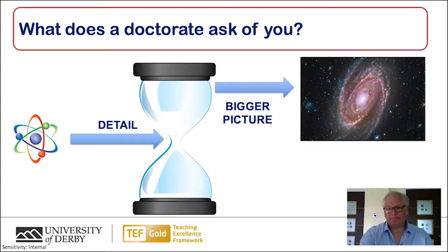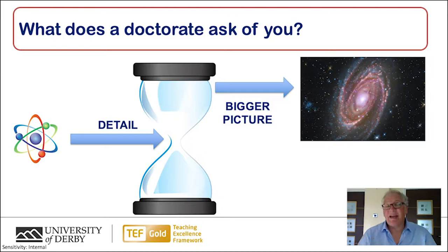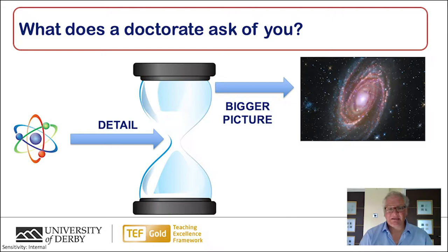In the diagram here on the left hand side, there's a picture of an atom, and this represents the minute detail, the narrow focus that you have to explore as a doctoral student. You have to go into that focus in great detail and depth to become an expert in that area. But as your thesis develops, and as you try to explain it, you will also need to look outwards at the bigger picture, represented here by the picture of a galaxy. You need to do that to establish how your research is justified in your field and beyond.